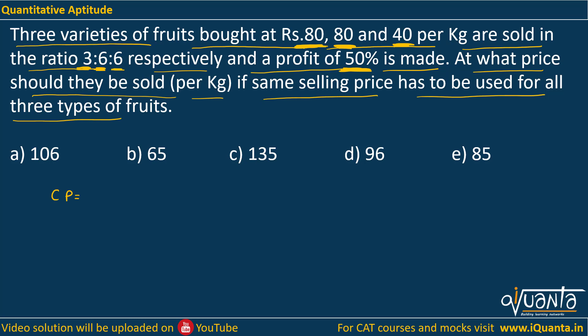So: three kg of variety one was bought, six kg of variety two, and six kg of variety three. The total CP would be 80 × 3 for the first type, 80 × 6 for the second type, and 40 × 6 for the third type.